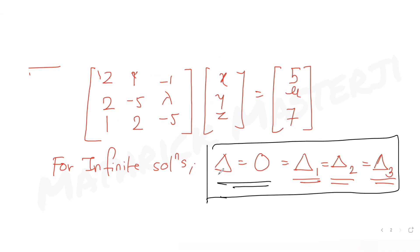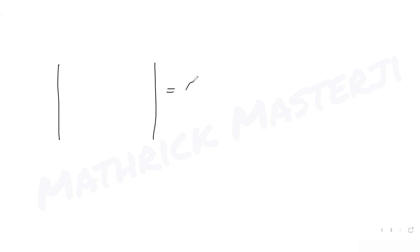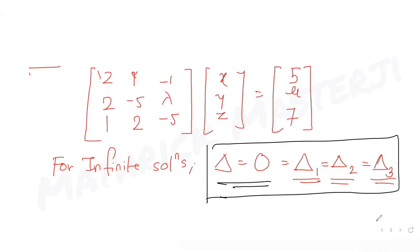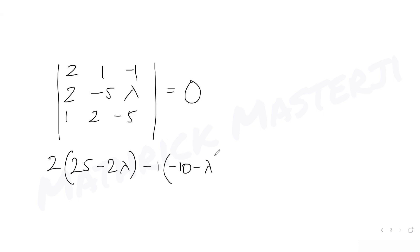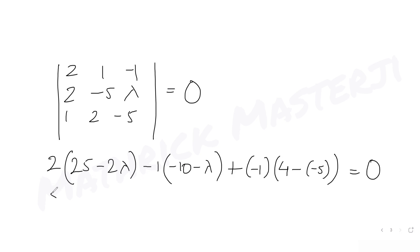Setting the determinant of the coefficient matrix equal to 0, I write: |2, 1, -1; 2, -5, λ; 1, 2, -5| = 0. Expanding: 2[(-5)(-5) - λ(2)] - 1[(2)(-5) - λ(1)] + (-1)[(2)(2) - (-5)(1)] = 0, which gives 2(25 - 2λ) - 1(-10 - λ) - 1(4 + 5) = 0.